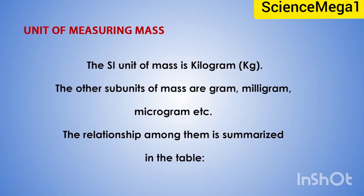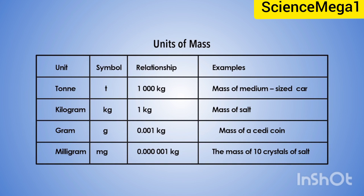Now, units of measuring mass. The SI unit for measuring mass is kilogram with the symbol kg. The other subunits of mass are grams, milligrams, micrograms, etc. In the table we have columns for unit, symbol, relationship, and examples. Ton has the symbol T and equals 1,000 kilograms — an example is the mass of a medium-sized car. Kilogram, symbol kg, equals 1 kg — for example, the mass of salt. Gram, symbol g, equals 0.001 kilograms — for example, the mass of a small coin. Milligram, symbol mg, equals 0.000001 kilogram — for example, the mass of 10 grains of salt.